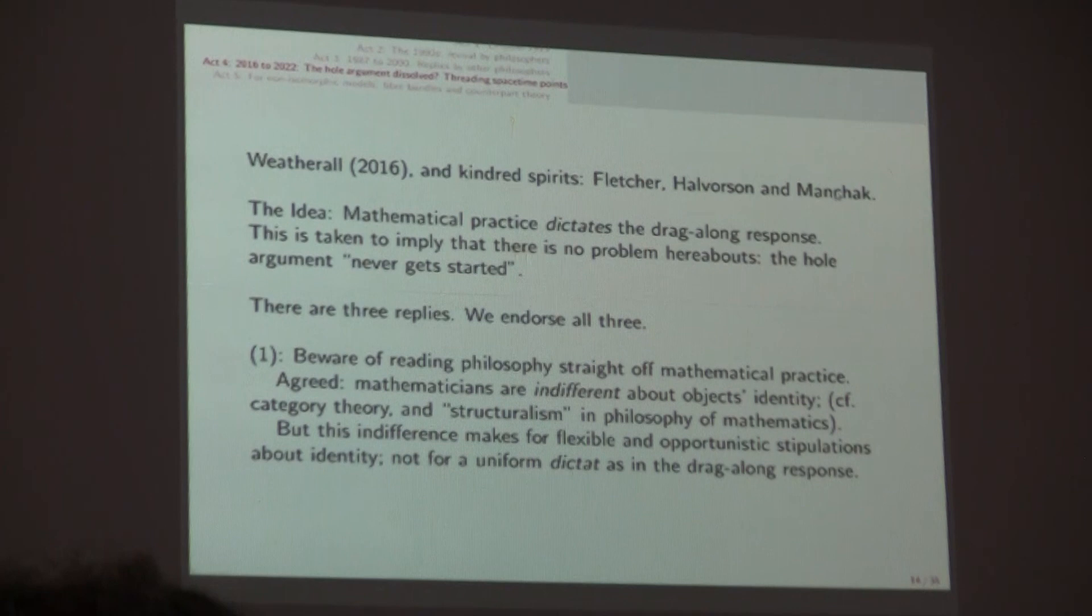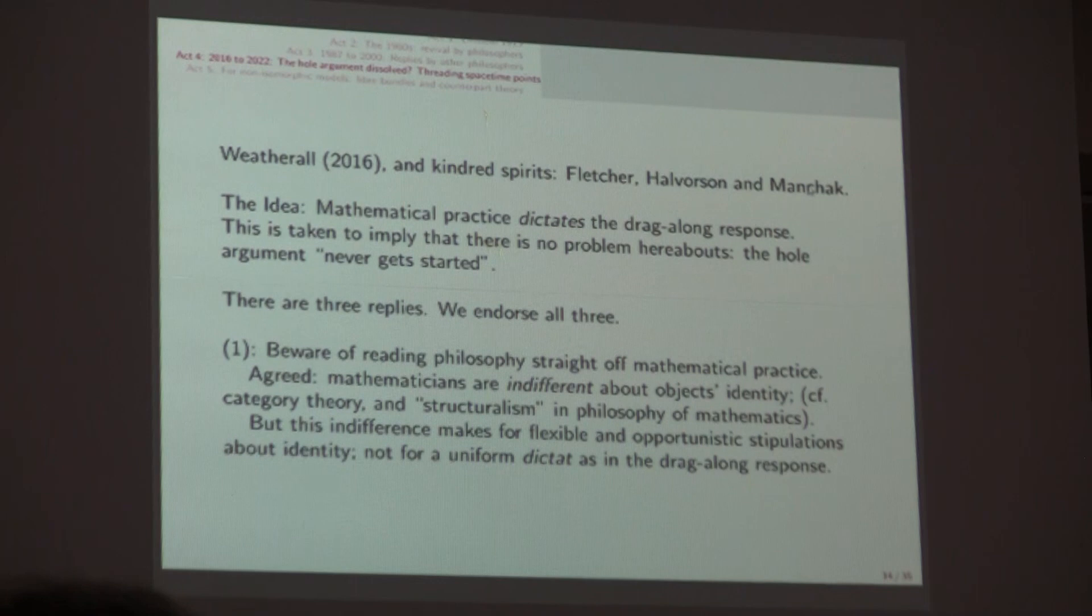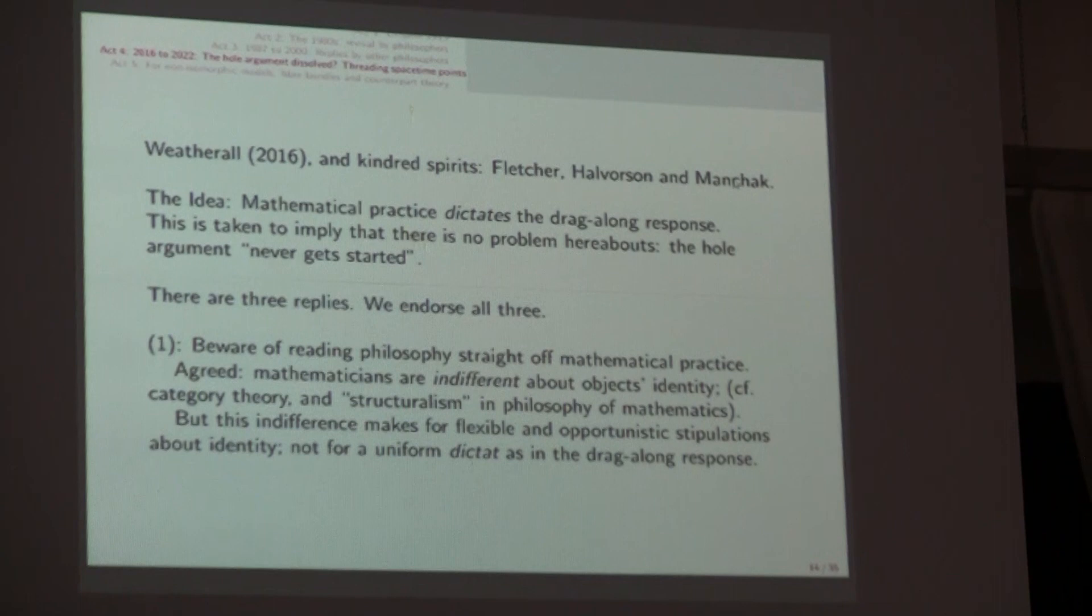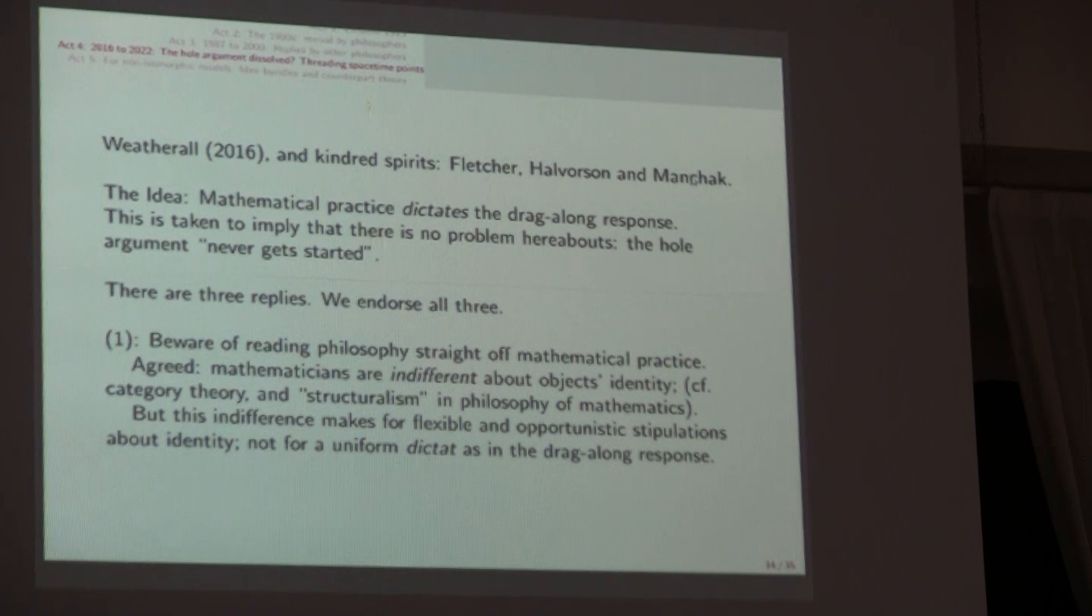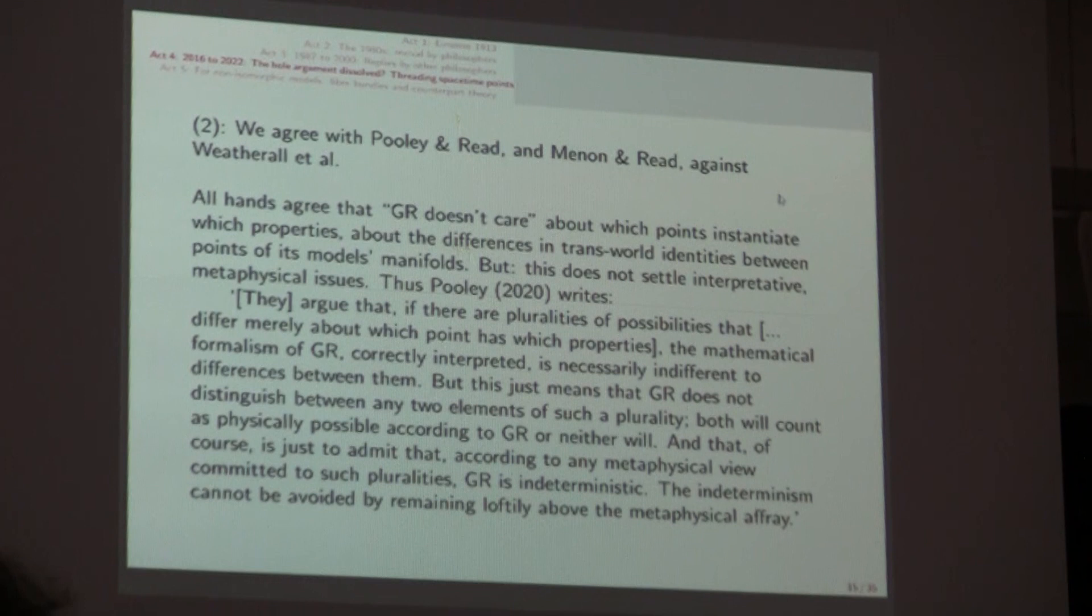This was after a 20-year quiet period for the hole argument. Mathematical modern practice dictates the drag-along response. Now I think this is wrong and there are three replies and the first is perhaps the crucial one. Don't read philosophy straight off the practice of mathematics. I fully agree, Gomes fully agrees mathematics is indifferent to the identity of objects. You see that in category theory and in so-called structuralism in the philosophy of mathematics. But indifference makes for being flexible and opportunistic in making stipulations about what counts as the same as what. It does not make for some uniform diktat from the head office.